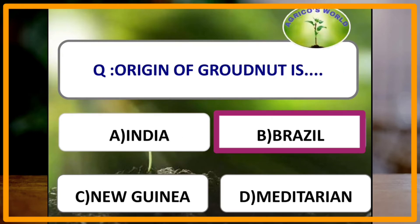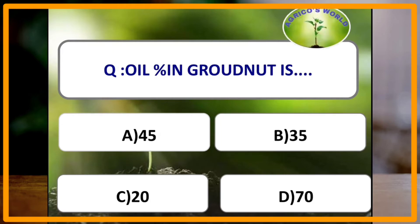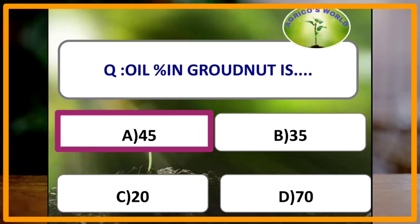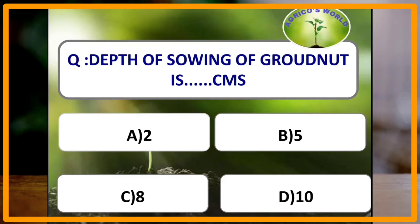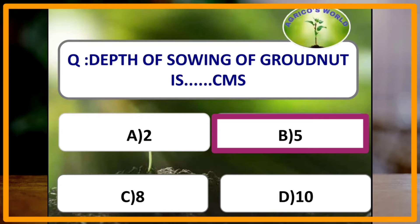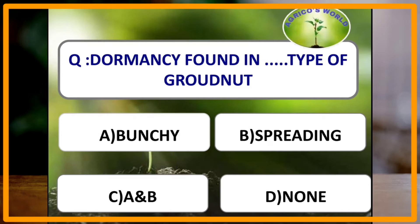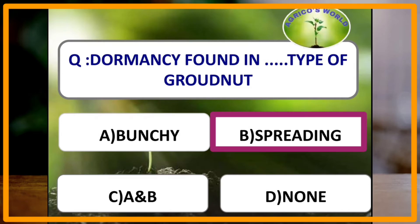Origin of groundnut is Brazil. Oil percentage in groundnut is generally 42 to 45% and protein percentage of groundnut is 20%. Depth of sowing of groundnut is 5 cm, as groundnut is a bold seeded crop. Dormancy is found in which type of groundnut? The answer is spreading type. Dormancy lasts up to 2 to 2.5 months and it can be broken by naphthaleneacetic acid and indoleacetic acid.